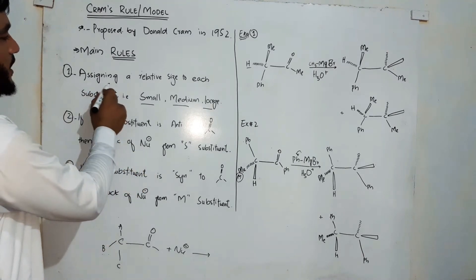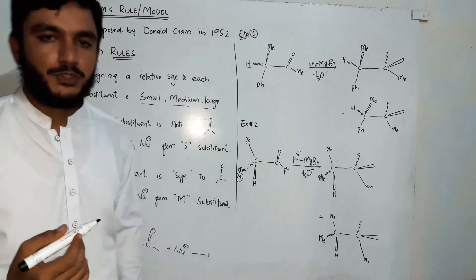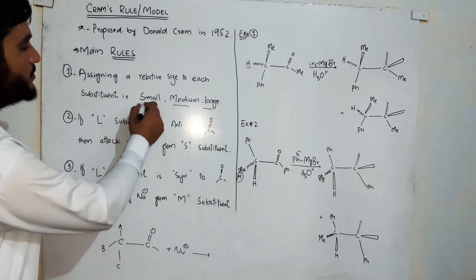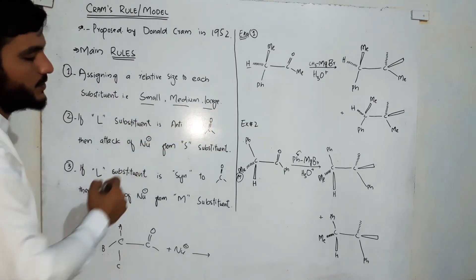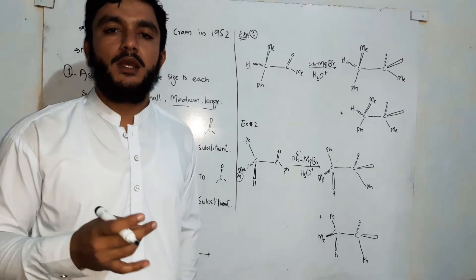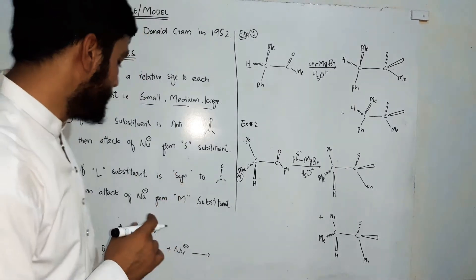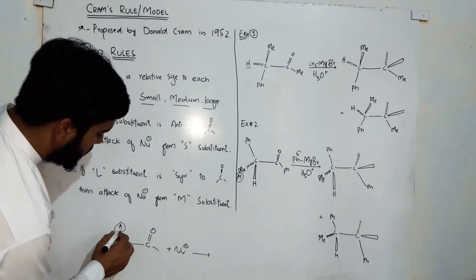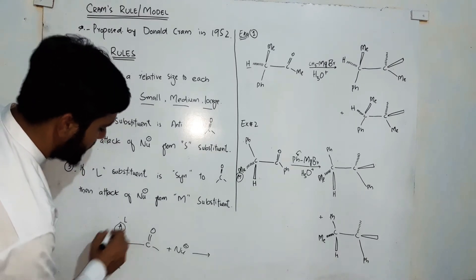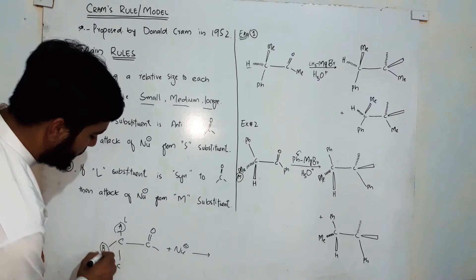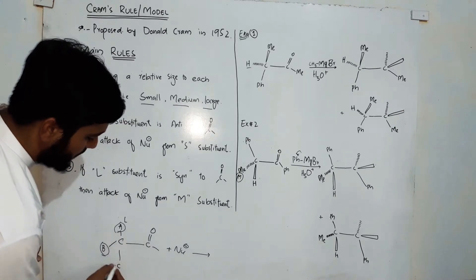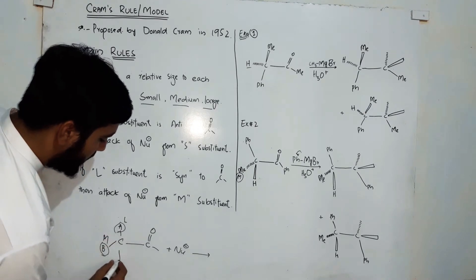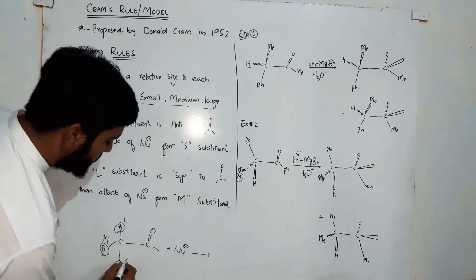Rule number one is the assignment of a relative size to each substituent attached to the chiral carbon: small, medium, and large. These are assigned on the basis of their masses. If A has the greatest mass, it is large; if B has smaller mass than A but larger than C, it is medium; and C is small.